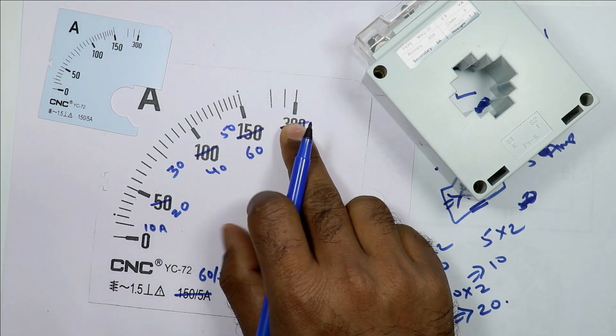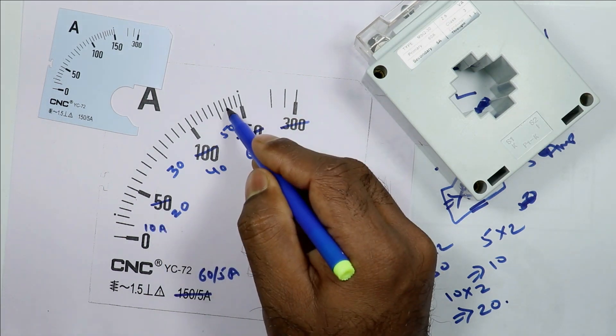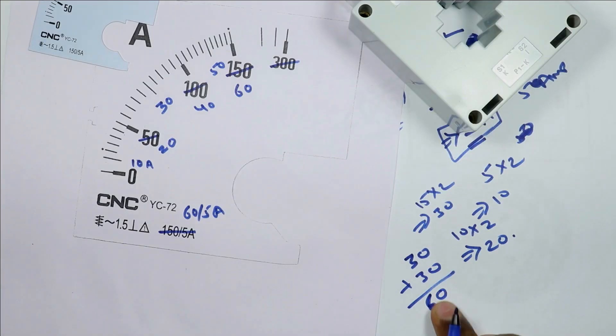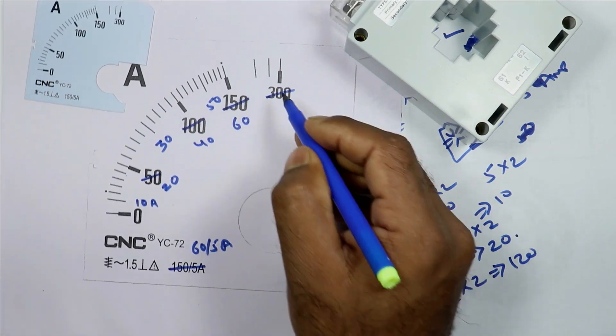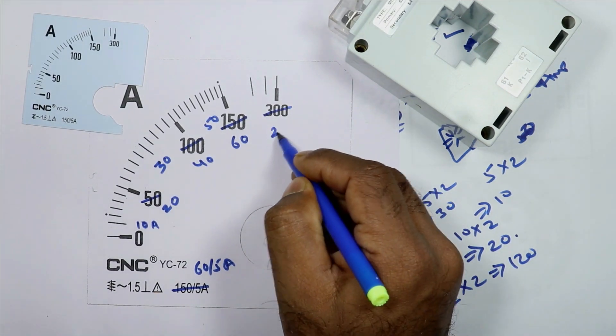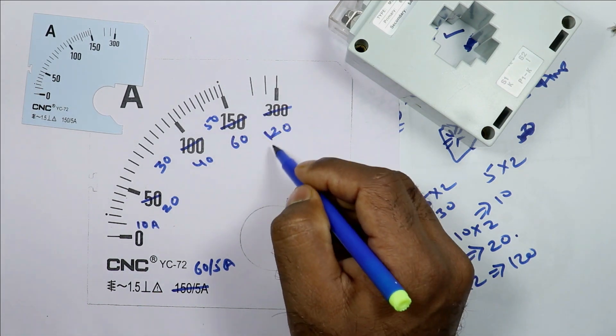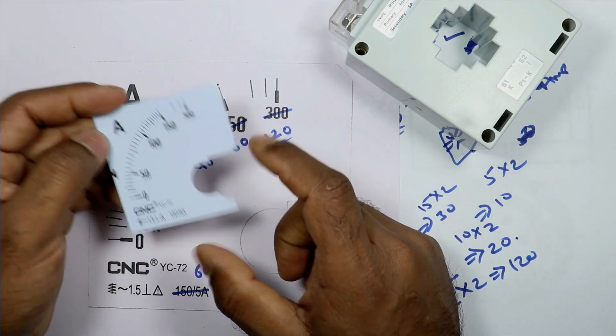For this, you have to count how many lines are there in between. Till here counting was 30. From here to here, 30 more will be added. So 30 plus 30 is 60. And if multiplied by 2, answer is 120. In place of 300, 120 ampere must be written. If ammeter shows reading till here, this means 120 ampere current is flowing.